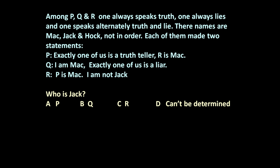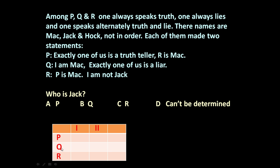To answer this question, let us prepare a small table with P, Q, R in statement one and statement two. We know out of these three, one always speaks truth, one always speaks lies, and the other one alternately speaks truth and lie. Let us assume P made two true statements.